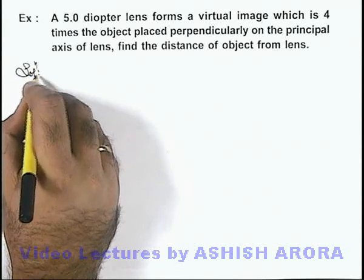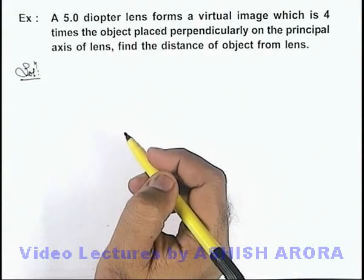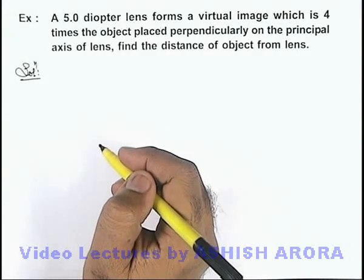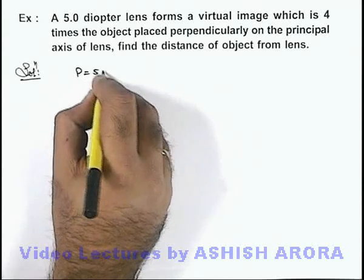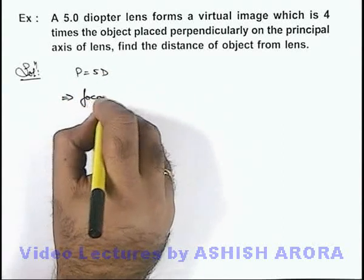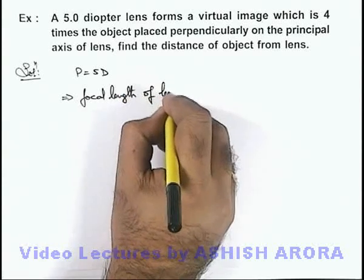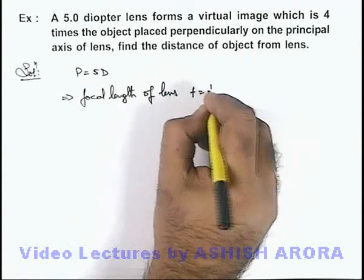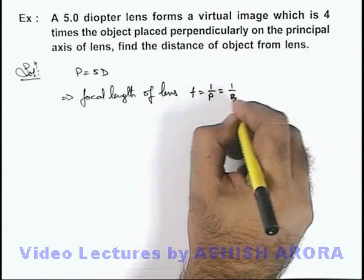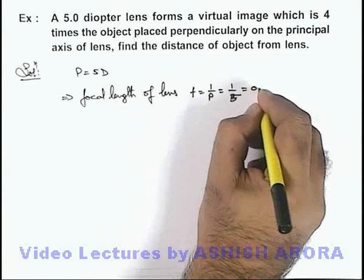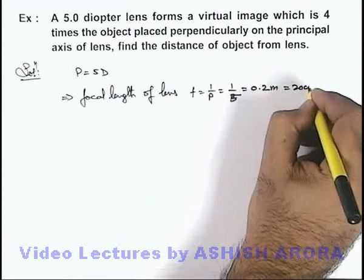Now in this situation as the image is 4 times enlarged, the lens must be a converging lens. Here we are given that the power of lens is 5, this implies here the focal length of lens can be directly given as 1 by power, this will be 1 by 5, which is 0.2 meter. That means the focal length of lens is 20 centimeters.